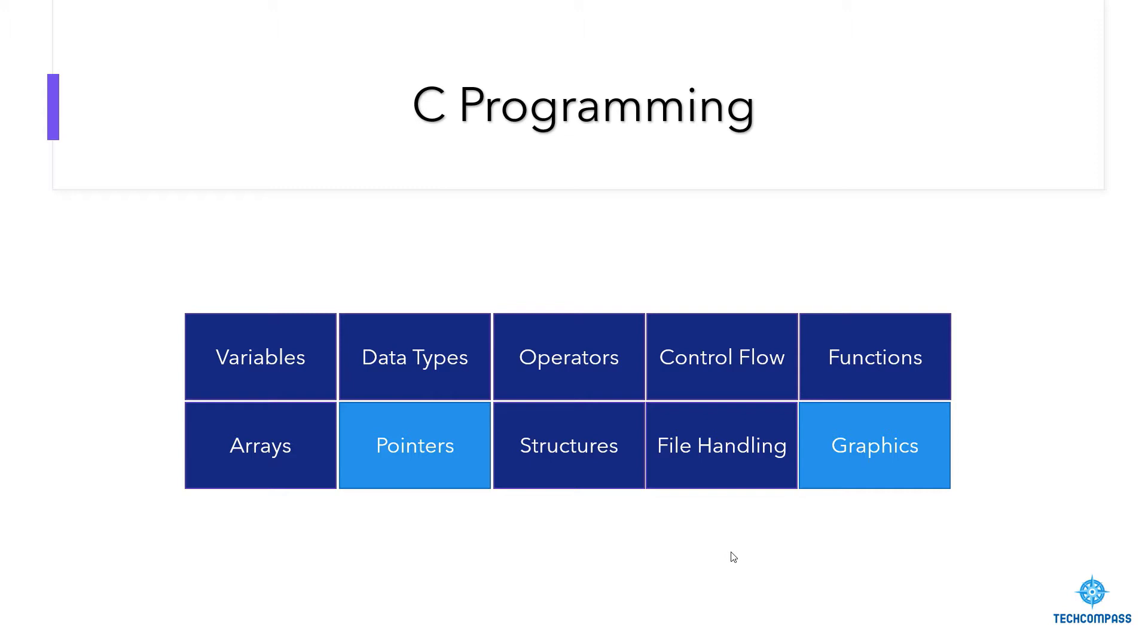If you look here, I have presented 10 building blocks to represent C language. You can easily represent the C programming language like this: Variables, data types, operators, control flow, functions, arrays, structure, file handling, pointers, and graphics. These are the 10 things which are most important in C programming language.